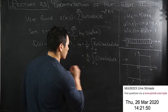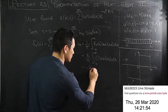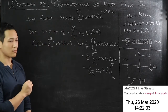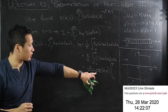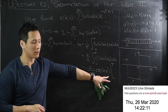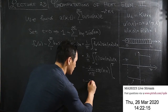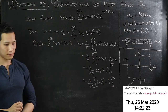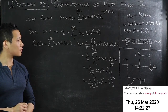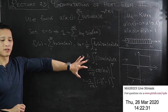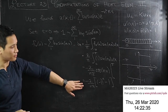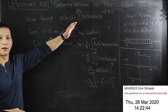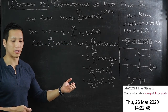Integrating the sine function gives minus 2 over (n pi) times cosine(nx) evaluated from 0 to pi. This becomes cosine(n pi), which equals (minus 1)^n, so b_n equals minus 2/(n pi) times ((minus 1)^n minus 1). By this stage, after two weeks of Fourier series, calculating these coefficients should be fairly standard. Solving the heat equation is really just applying the Fourier series techniques we've already learned.